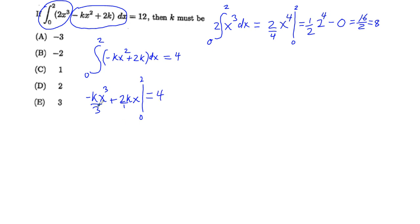Continuing to work below, what we're going to have is plugging in 2. We're going to have negative k times 2 cubed over 3, plus 2k times 2. And we would subtract out minus 0, plugging in for x, would be equal to 4.